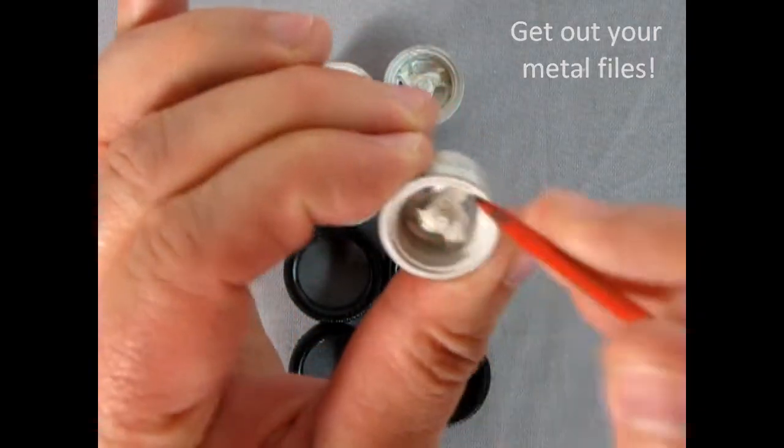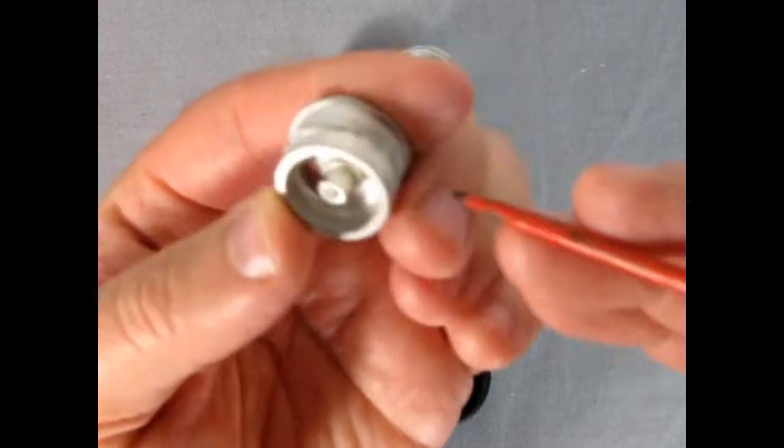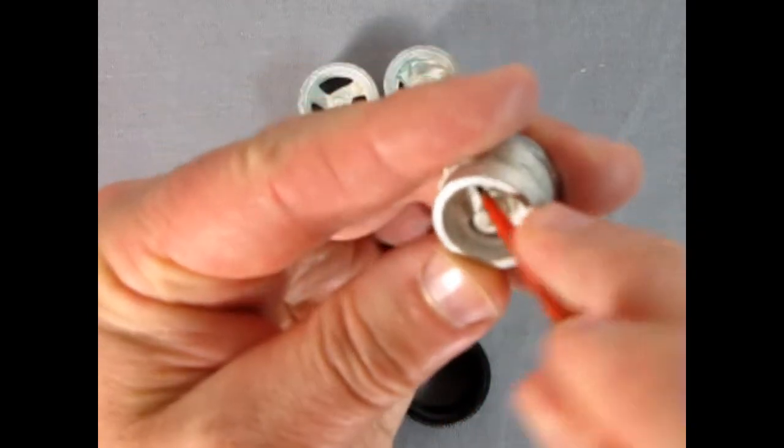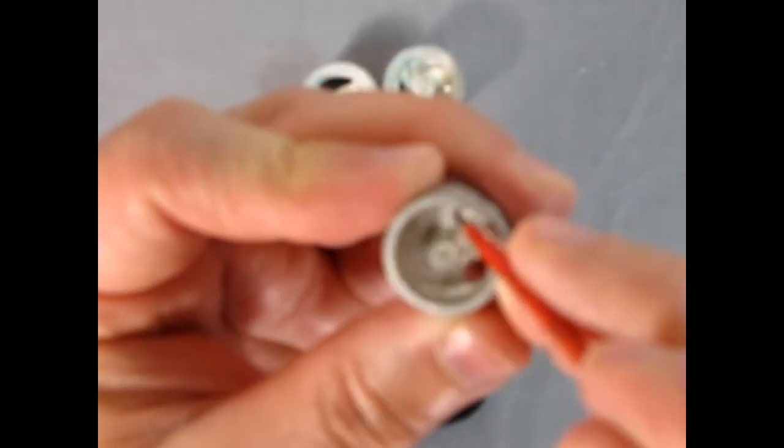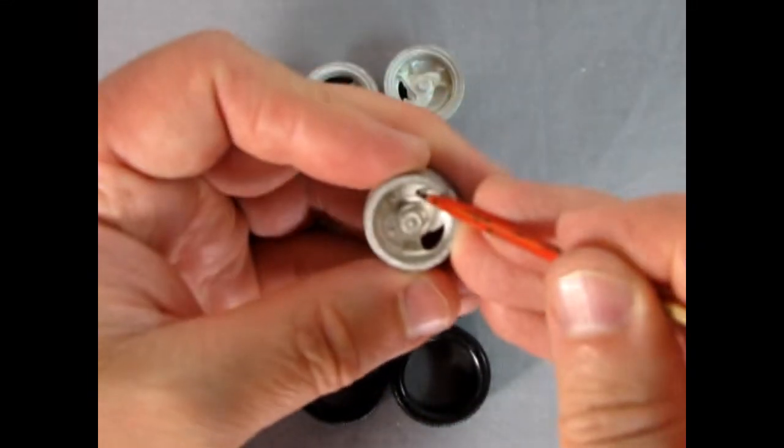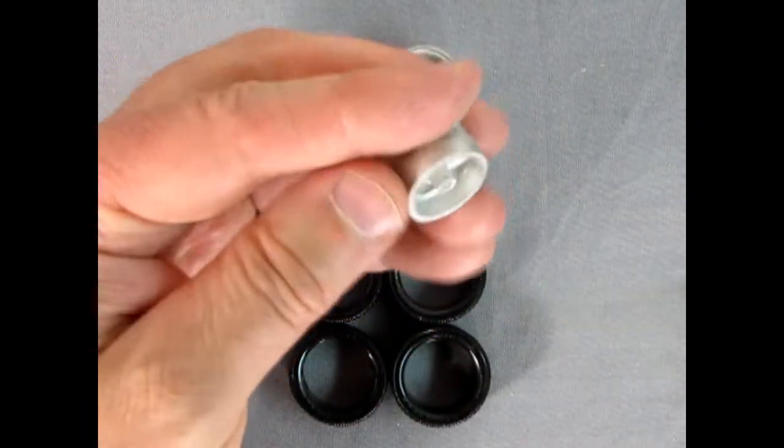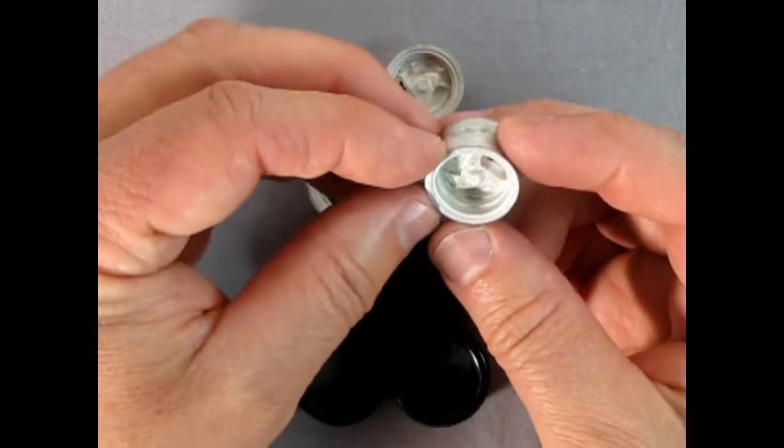But you should be able to get rid of that very easily with some metal files or even your hobby knife. You can see that I'm actually squishing little holes into it right here with the bamboo stick so it's not really that difficult to get rid of. You will also have to polish these in here, maybe use a Q-tip or something.